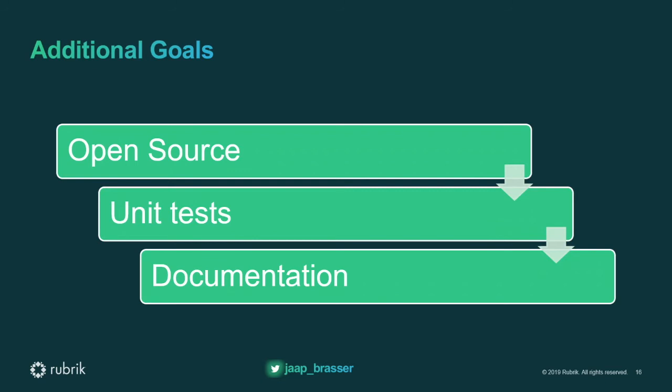Our other goals were to make sure it's open source, so we put our SDKs up on GitHub — not just because it's nice, but also because I want other people to work on it. In order to support community contributions, we made sure we have unit tests. Whenever a pull request comes in, we want to know that nothing breaks and everything keeps working. And we want documentation there so people know how to actually use our SDKs.